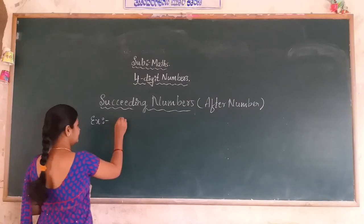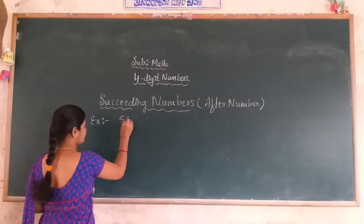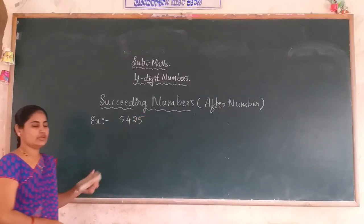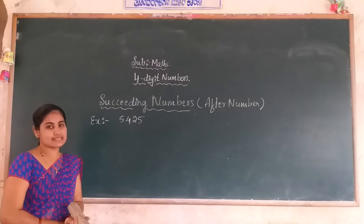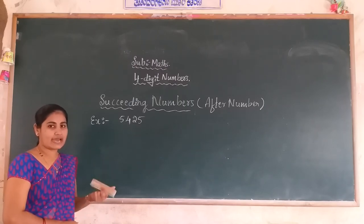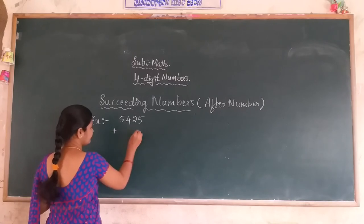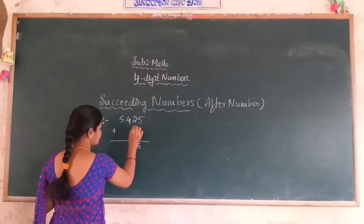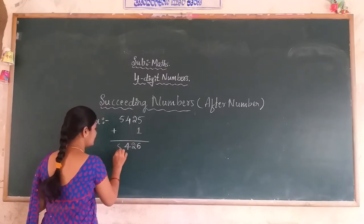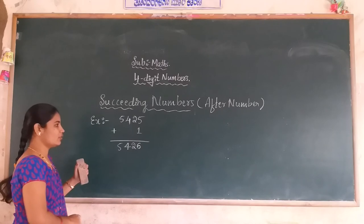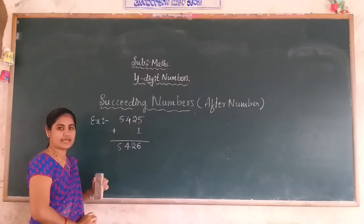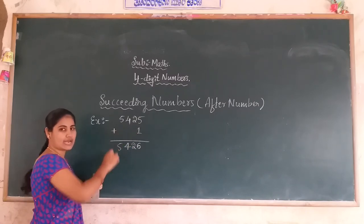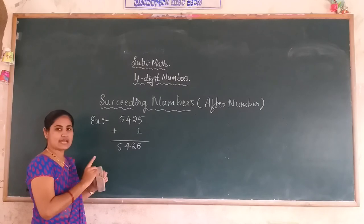Let me give one more example: 5,425. This is one of the 4-digit numbers. How to find the succeeding number of this number? You add 1 to the given number. 5 plus 1 is 6; the remaining numbers stay the same because there is no carry. Only in the unit place is 1 added.